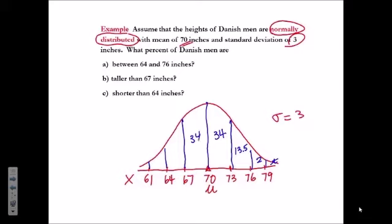34, 13.5, 2%, and tiny. We can use this picture, this is the empirical rule, we can use this picture to help us solve this problem.